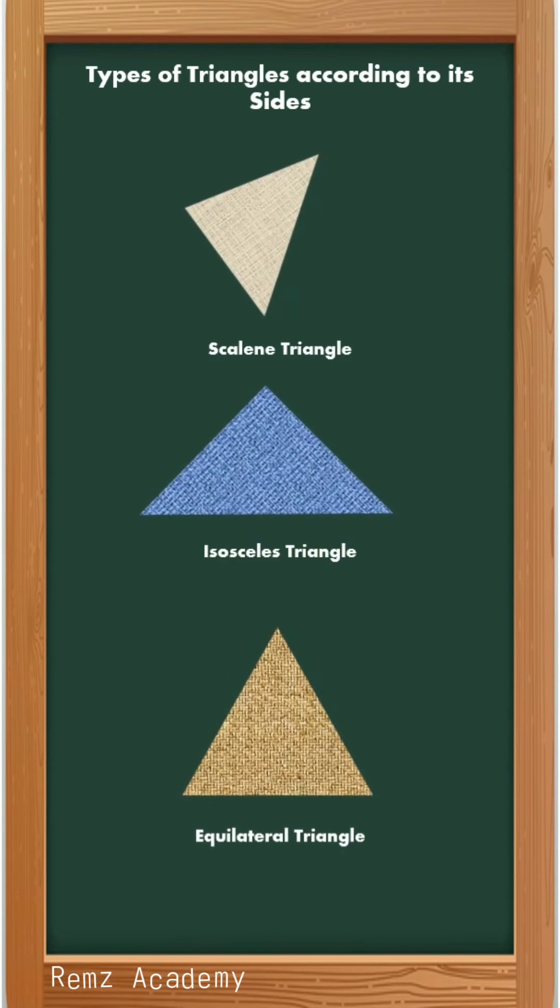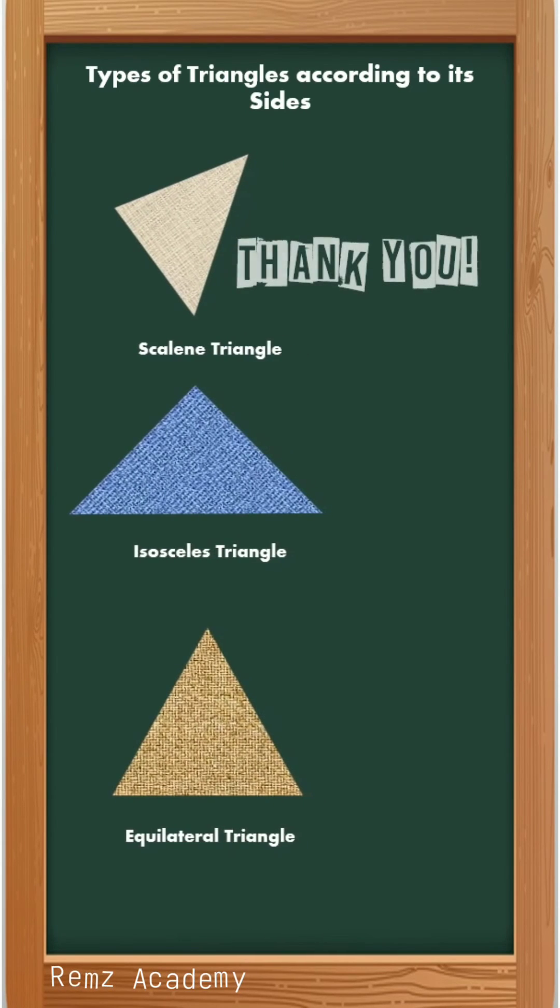This is the summary of our lesson. Remember these words: scalene, isosceles, and equilateral. Thank you.